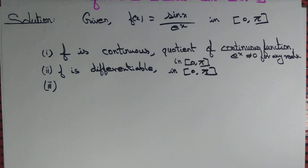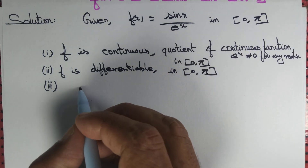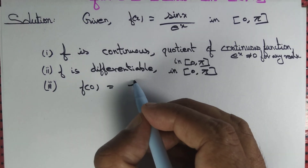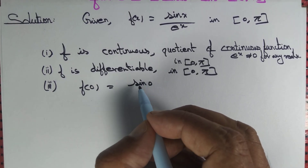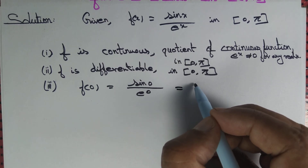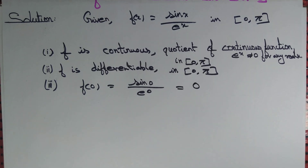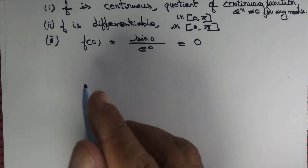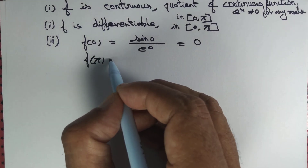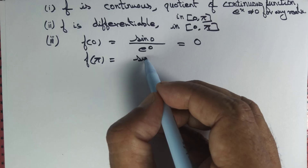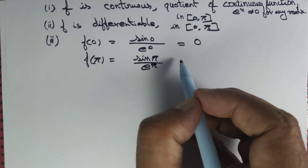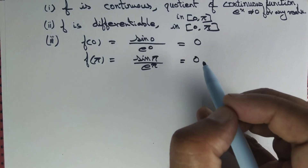Now, what about f at the endpoints? f(0) = sin(0) / e^0, which equals 0. What about f(π)? f(π) = sin(π) / e^π, which is also equal to 0.